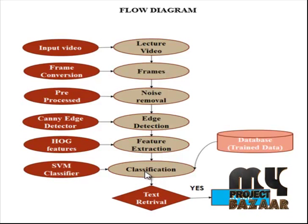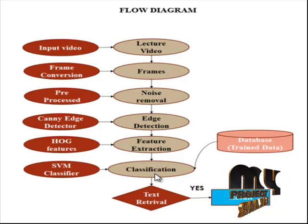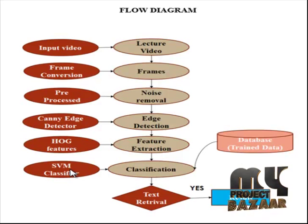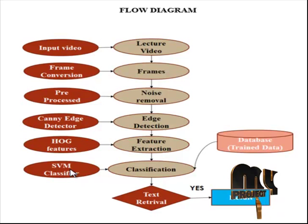Finally, in the classification stage, the SVM classifier is used. The input video features and the entire database features are passed into the classification algorithm. The SVM maps input vectors to a higher dimensional vector space where an optimal hyperplane is constructed. Among all available hyperplanes, only one maximizes the distance between itself and the nearest data vectors of each category — this is called the optimal separating hyperplane. The margin is defined as the sum of distances of the hyperplane to the closest training vectors of each category.